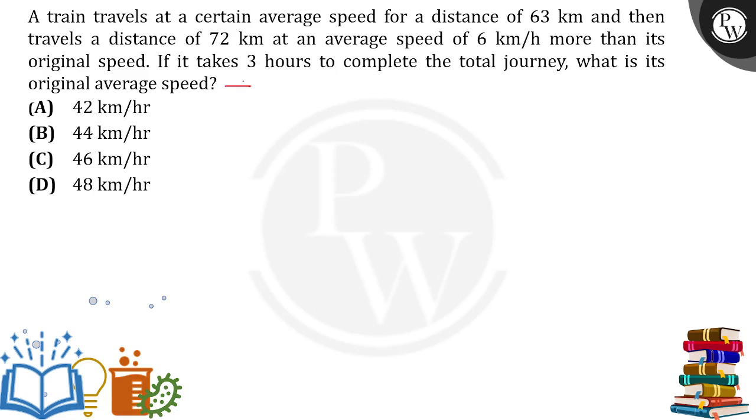Let the average speed be x km per hour. The train travels at a certain average speed for distance of 63 km. Time taken by train to cover 63 km with the original speed will be 63/x, since time equals distance by speed.